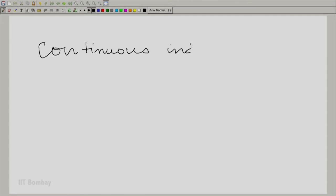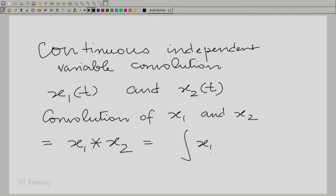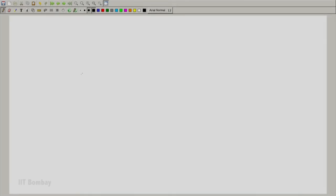We are trying to create a continuous independent variable convolution. We have two continuous independent variable functions, x_1(t) and x_2(t). We wish to calculate the convolution, represented as usual by a star. That is calculated to be integral of x_1(lambda) x_2(t minus lambda) d lambda integrated over all lambda. This is done for each t.